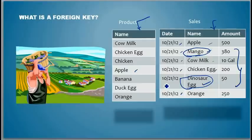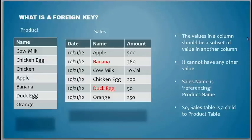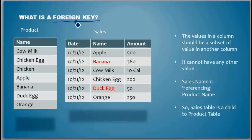So he needs to find a way where his sales people, when they enter data, they don't make a mistake. In the database system, he can implement something called a foreign key. What is a foreign key? Let's take the example first and analyze it, and then I'll explain what a foreign key is.